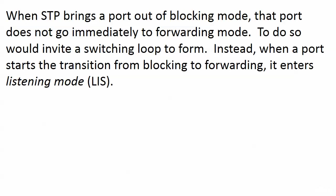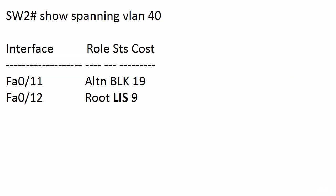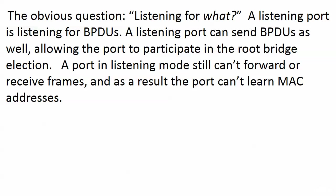As for those intermediate stages: when STP brings a port out of blocking mode, that port is not going to go immediately to forwarding mode, because that does invite switching loops. First, when a port starts that transition from blocking to forwarding, it enters listening mode — listed as LIS in show spanning VLAN. A listening port is listening for BPDUs, and it can also send BPDUs, which allows the port to participate in a root bridge election. What a port in listening mode cannot do is forward frames, receive frames, or learn MAC addresses dynamically.